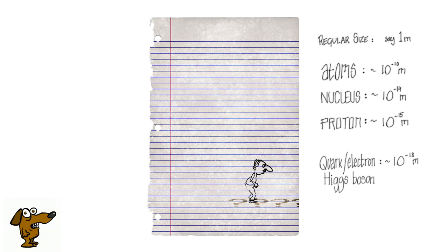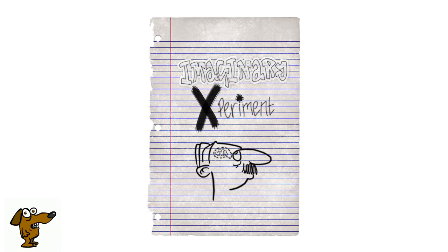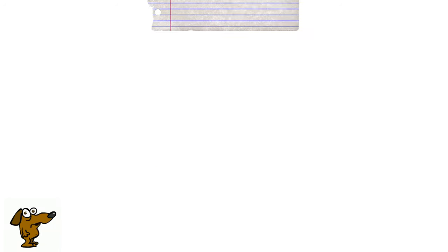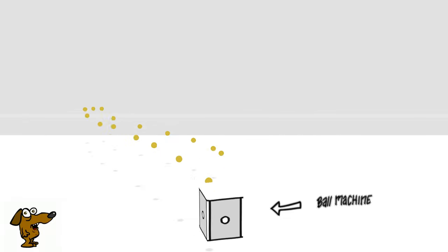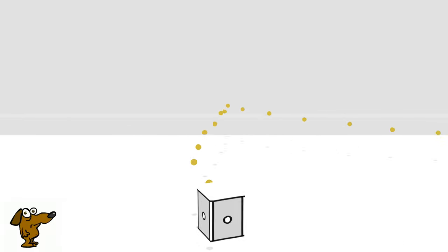The best way to describe quantum physics is to show you some examples of quantum behavior. For this we will do an imaginary experiment. Let's start with a familiar large particle. A tennis ball will do. Imagine a ball machine firing a spread of tennis balls against a wall. It would look something like this.